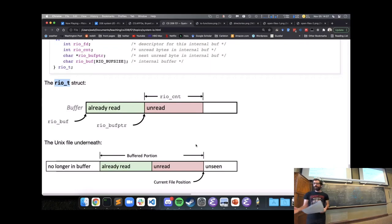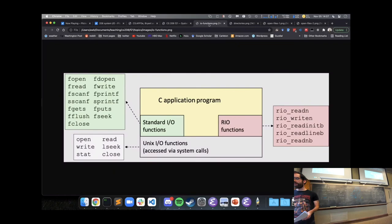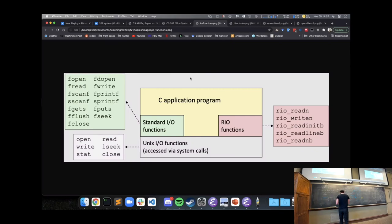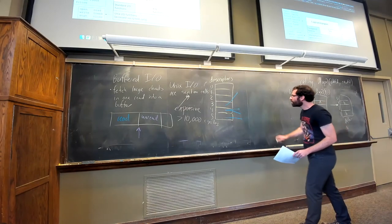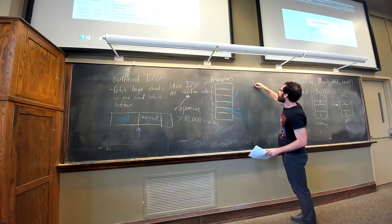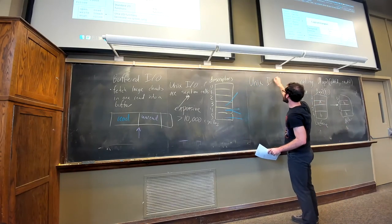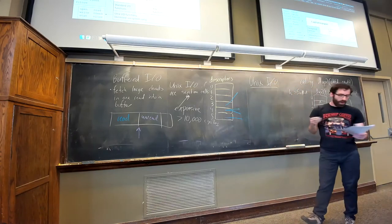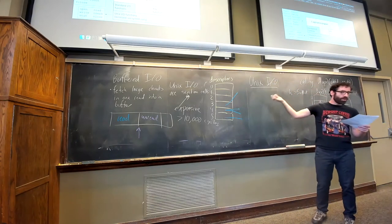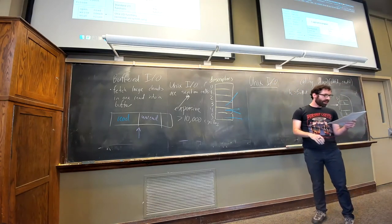So we've gone through all these different IO functions — that leaves us with the question of which one should we actually use, and when would we want to use Unix IO?